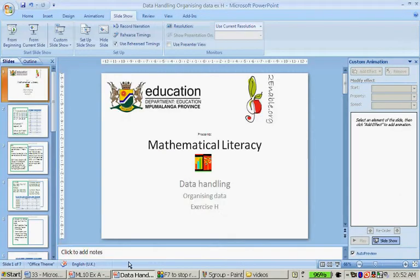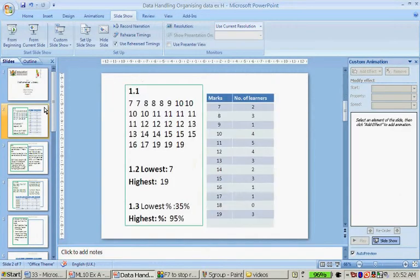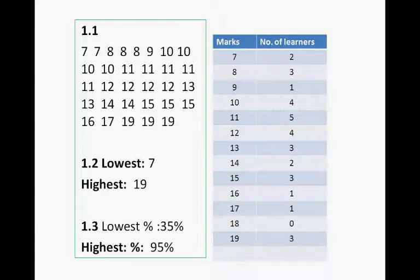Now this is the data in ascending order. The lowest is 7 out of 20 and the highest is 19 out of 20.